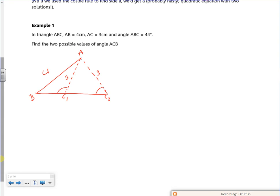Right then. So I know that B is 44, don't I? There. So if I do the sine rule, then sine C over 4 is sine 44 over 3. And then I can rearrange it, so sine C is 4 times sine 44 over 3. So C is the inverse sine 4, sine 44 over 3.